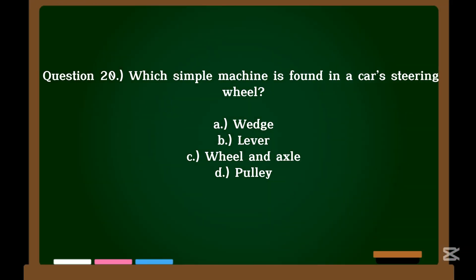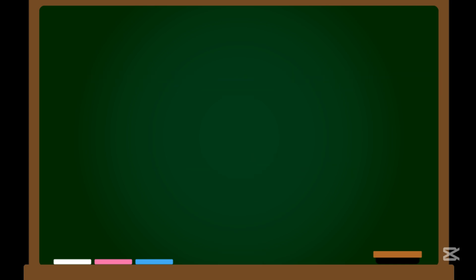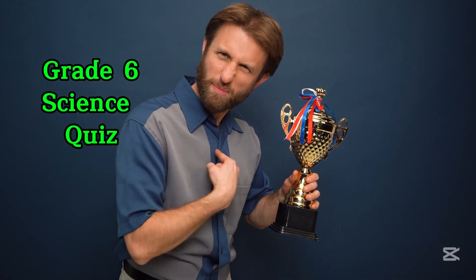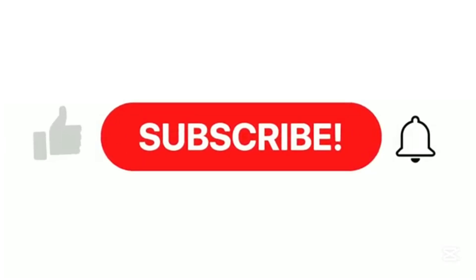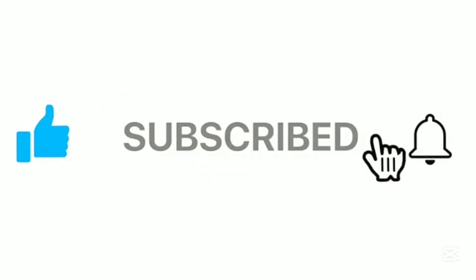Question 20. Which simple machine is found in a car's steering wheel? A. Wedge. B. Lever. C. Wheel and axle. D. Pulley. Correct answer: C. Wheel and axle. And that's a wrap. We've completed all 20 questions of our grade 6 science quiz about simple machines. If you enjoyed this quiz, please don't forget to hit that subscribe button and the notification bell to support my channel.